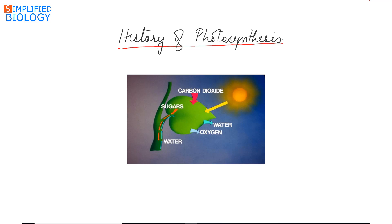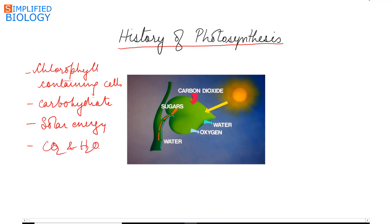Before going to the history, what is photosynthesis? Photosynthesis can be defined as a process by which chlorophyll containing cells synthesize carbohydrate by the help of solar energy from carbon dioxide and water, and the by-product is oxygen.